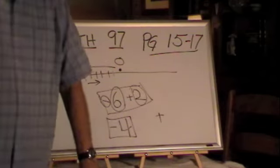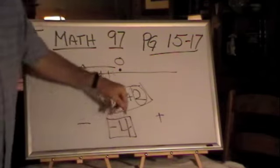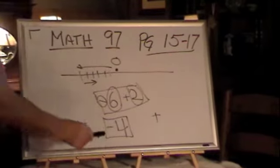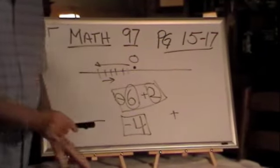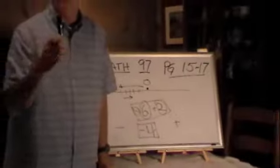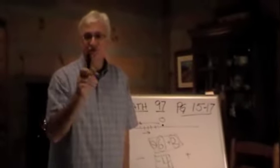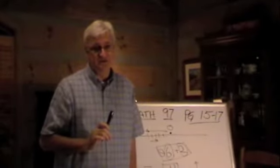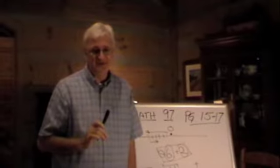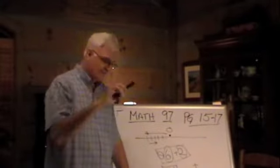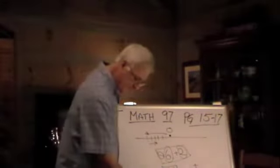That's what absolute value means. You just drop the sign, subtract the value, and keep the sign of the larger. We'll do some more of the absolute value later on. Even for the test, they have a little bit of that on the Accuplacer test. It's very simple. Okay, pause right now and we're going to go on to the bottom of page 15.